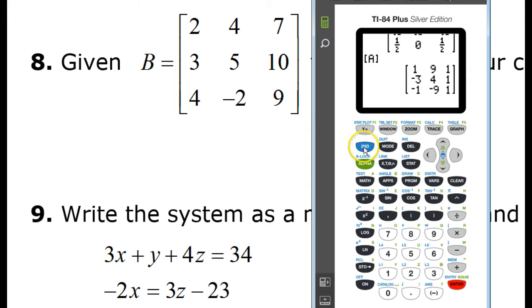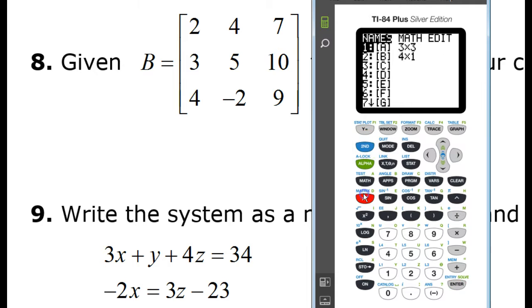So, I'm going to hit 2nd matrix, and switch over to the edit menu, go down to matrix B. This is a 3x3 matrix, so I need to change the dimensions, and I'll just type these numbers in.